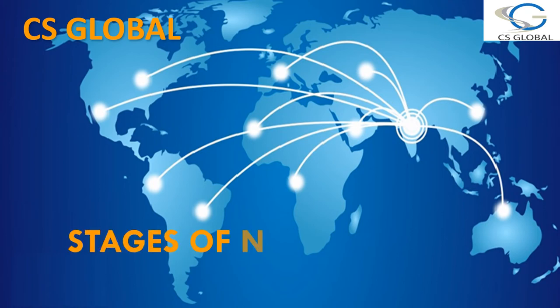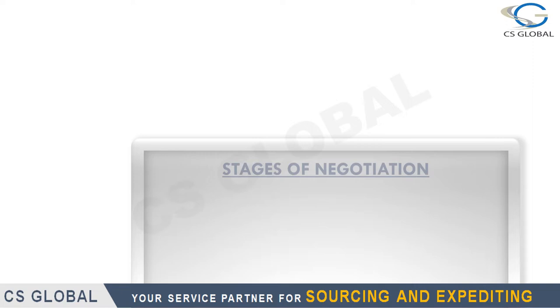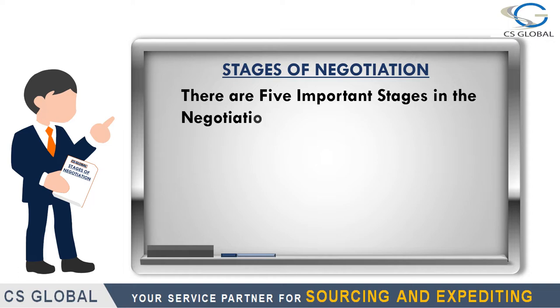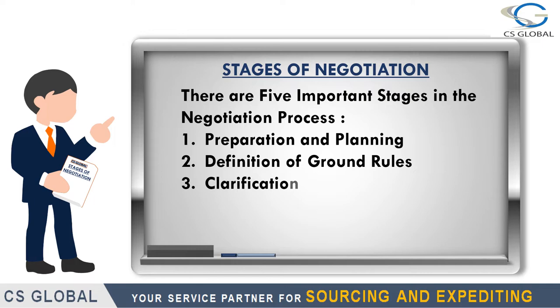Stages of negotiation. There are five important stages in the negotiation process: preparation and planning, definition of ground rules, clarification and justification, bargaining, and settlements.